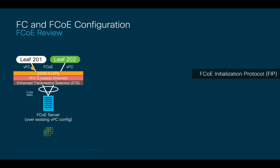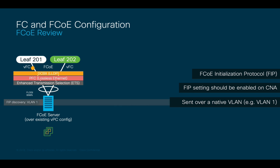In order for this to happen, FIP needs to be enabled on the CNA adapter, so make sure you do it. Immediately after, it will start the FIP discovery. Why am I explaining all this? Because such FIP discovery will be sent on a native VLAN. And unless you add it to your VLAN pool, you will not have FCoE working correctly.